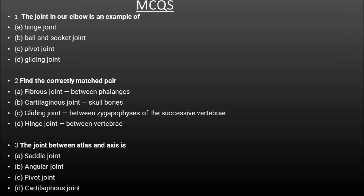These MCQs are the most important repeatedly asked questions. First: the joint in the elbow is an example of — option A hinge, B ball and socket, C pivot, D gliding. Correct answer: option A, hinge joint. Ball and socket is seen in shoulder and hip; pivot is seen in superior/inferior radioulnar and atlanto-axial joints; gliding (plane) joint is seen between carpals. Second MCQ: find the correctly matched pair — fibrous joint between phalanges, cartilaginous joint between skull bones, gliding joint between zygapophyses of successive vertebrae, hinge joint between vertebrae. Correct answer: option C — gliding joint between the zygapophyses of successive vertebrae.